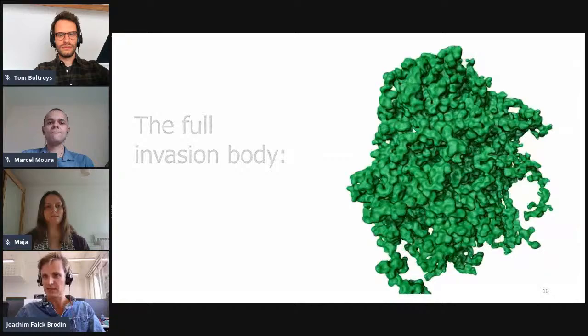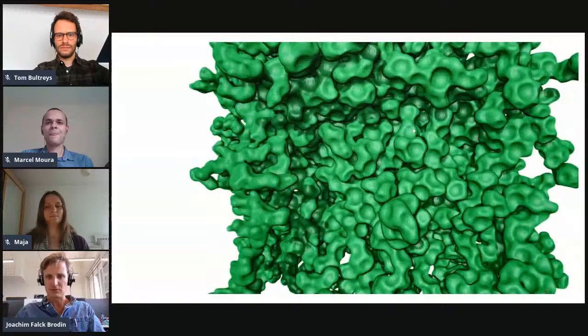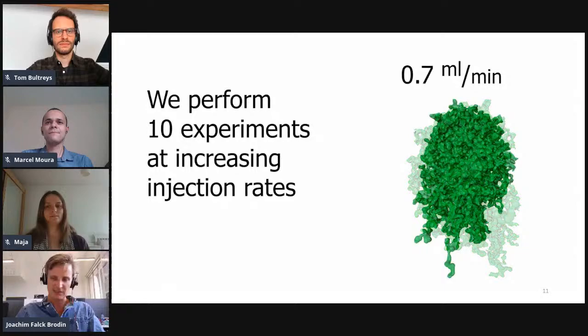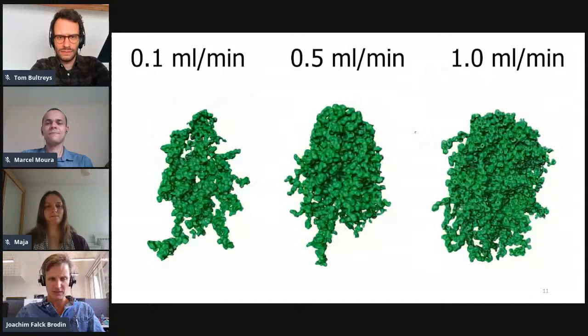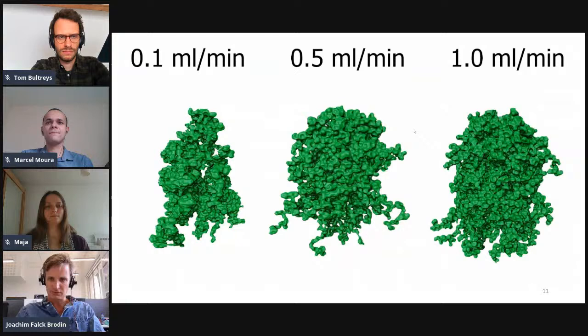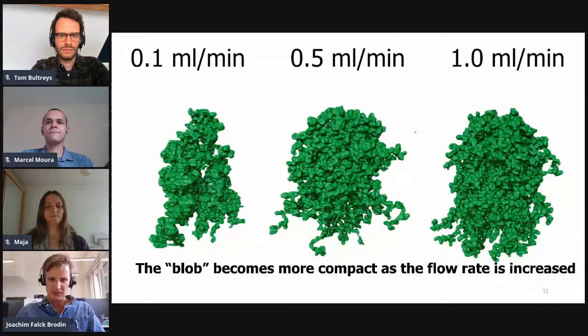What do we do to try to make sense of this? This is the main experimental result. As you can see, it has a lot of geometry and characteristics that we can try to analyze. We've done 10 experiments at different fixed flow rates and try to put what we see into context. There is a change as the flow rate increases — the structure gets more and more dense and concentrated. The blob is getting more and more compact as the flow rate is increased.